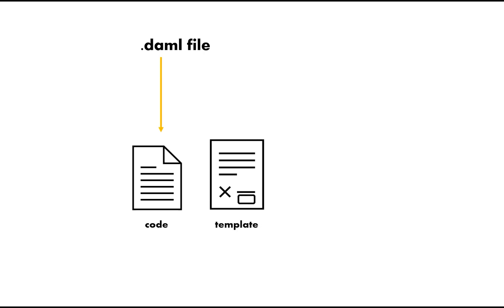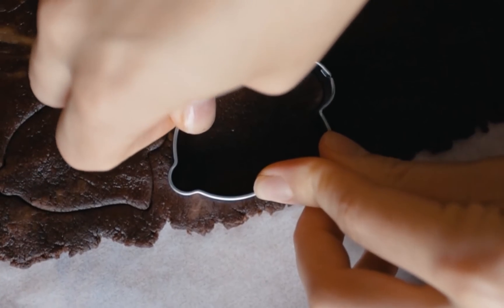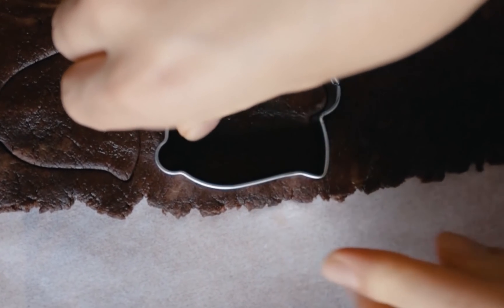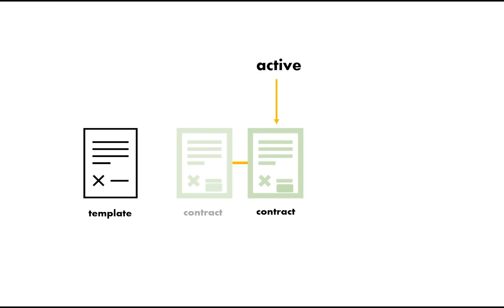The code that you write will reside in a .daml file. A .daml file is then compiled into a .dar file, or DAML archive file. The .dar file shouldn't be confused with Dart files found in frameworks like Flutter. The .dar file is what defines what we call a template in the framework, and a template is what the framework uses to create contracts. That is the part that is immutable. Think of the template like a cookie cutter — when you use it, it produces a contract with some data, and that is a unit of data that cannot be modified. If there is a reason to update the chain of data, you use the template again to create a new contract based on the old one. The latest will be marked as active, and any prior ones will be archived. Remember, in blockchain we cannot mutate old data.